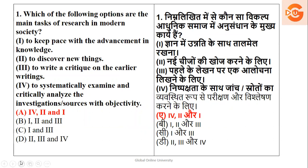Question 1: Which of the following options are the main tasks of research in modern society? The options are: to keep pace with advancement in knowledge — yes; to discover new things — yes; to write a critique on earlier work — no, we are not interested in the critique; to systematically examine and critically analyze — yes. So options 1, 2, and 4 are the right answer.